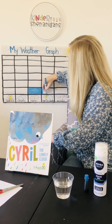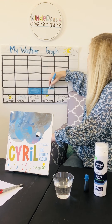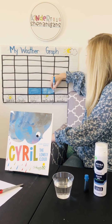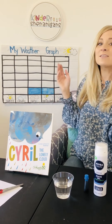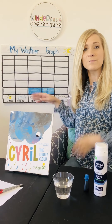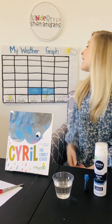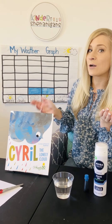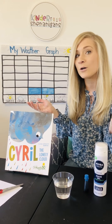Now remember, your weather graph is probably going to look different than mine. So if your weather is not partly cloudy today, you can color in whatever your weather is on your own weather graph. Now if I look at my graph, we have the same amount for rainy. I'm partly cloudy. What's the same on your weather graph? I don't have two in the same spot yet, so nothing's greater or less than yet. Do you have anything greater or less than yet on your graph?